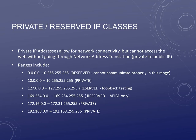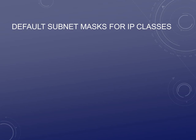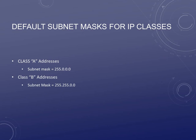You have to remember these private ranges. Now, along with classes A, B, and C, there are default subnet masks for every class. They're very easy to remember. For Class A — the 0 to 127 range — the subnet mask is always 255.0.0.0. That's the default subnet mask. When we get into subnetting, we're going to start changing this. For Class B, the subnet mask is 255.255.0.0 — that's the 128 to 191 range. For Class C — the 192 to 223 range — the default subnet mask is 255.255.255.0.